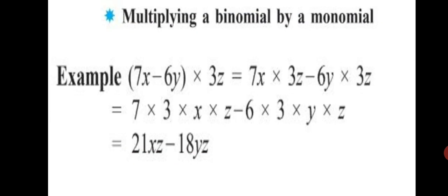Now, how about multiplying a binomial by a monomial? In the example, 7x minus 6y is a binomial and it is multiplied by 3z, which is a monomial. In such a situation, you take the first term from the bracket and multiply it with the monomial outside: 7x into 3z. Then take the second term, minus 6y, and also multiply it by 3z.